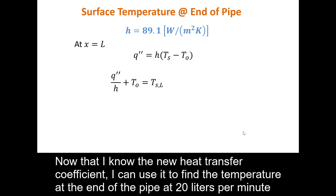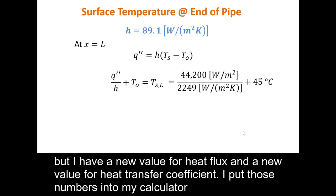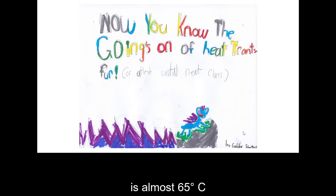Now that I have the new heat transfer coefficient, I can find the pipe surface temperature at the outlet at 20 liters per minute. The equation is symbolically the same as before, but with the new heat flux of 44,163 W/m² and the new heat transfer coefficient of 2,249 W/m²·K. Substituting these values, I find that the pipe surface temperature at the outlet is almost 65 degrees Celsius.